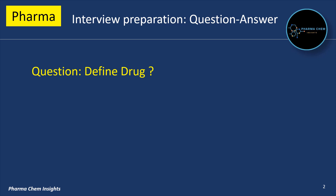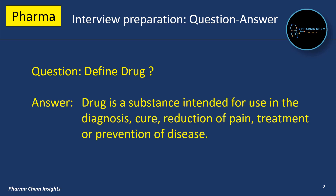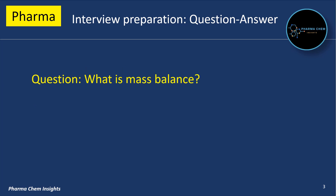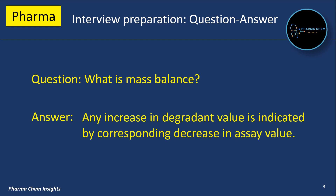1st Question: Define Drug. Drug is a substance intended for use in the diagnosis, cure, reduction of pain, treatment or prevention of disease. 2nd Question: What is mass balance? Mass balance is when any increase in degradant value is indicated by a corresponding decrease in assay value.